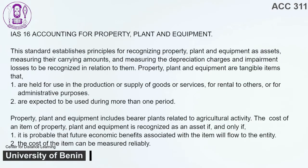IAS 16 — Accounting for Property, Plant, and Equipment. This standard establishes principles for recognizing property, plant, and equipment as assets, measuring their carrying amounts, and measuring the depreciation charges and impairment losses to be recognized in relation to them. Property, plant, and equipment are tangible items that: 1. Are held for use in the production or supply of goods or services, for rental to others, or for administrative purposes. 2. Are expected to be used during more than one period.